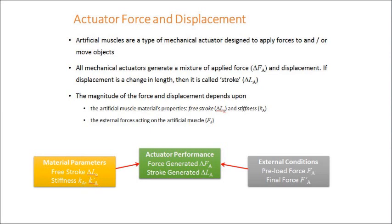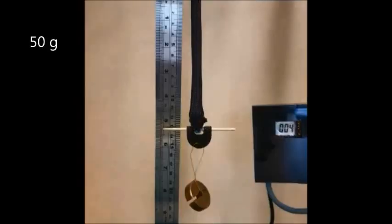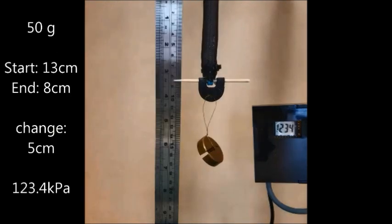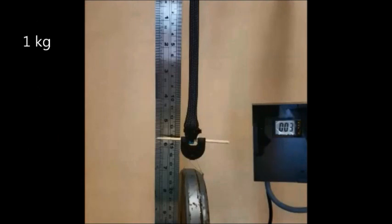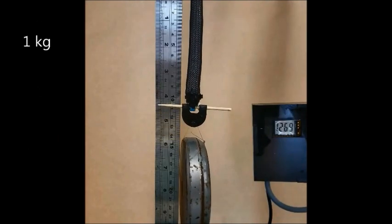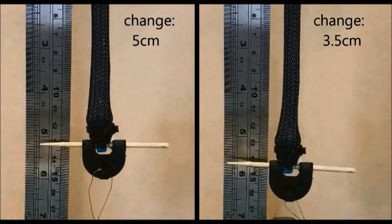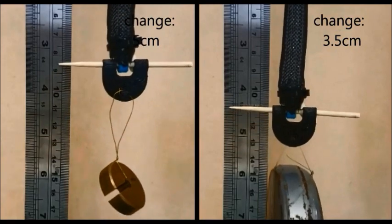For the material properties, the important properties are the free stroke and the stiffness of the actuator in the initial and the final states. In terms of the external loading conditions, the important things are the initial and the final force. Here's an example where the external loading conditions affect the amount of stroke generated, in this case by a pneumatic artificial muscle. When operating against a small load of 50 grams, the actuator can contract by 5 cm, but against a heavier load of 1 kg, it contracts by only 3.5 cm.